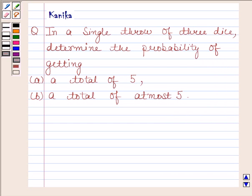Hi and welcome to our session. Let us discuss the following question. The question says in a single throw of three dice, determine the probability of getting A part is a total of 5, B part is a total of at most 5. Let us now begin with the solution.